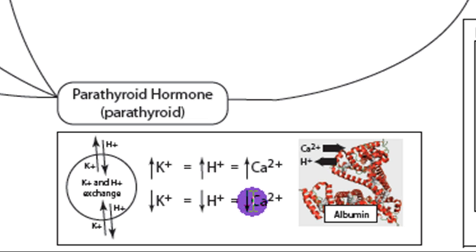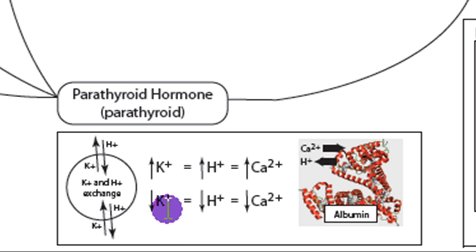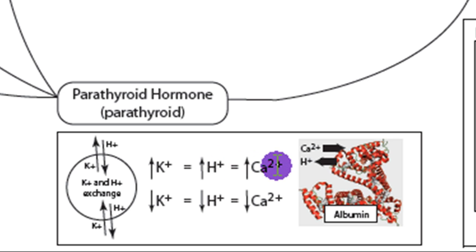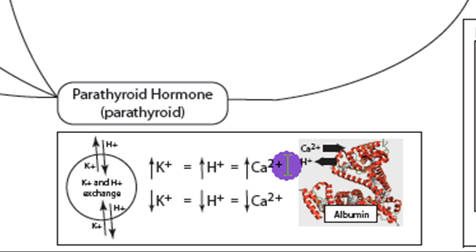On the other hand, if there's an increase in potassium, it'll run into the cell and kick off hydrogen. That hydrogen will go over and bind to albumin and kick the calcium off. So an increase in potassium will increase hydrogen ion concentration, decrease pH, and that will increase calcium. There's this fairly complex relationship between potassium, hydrogen, and calcium.